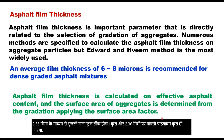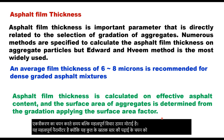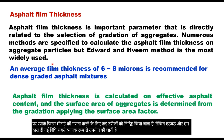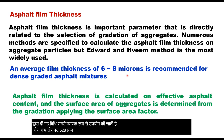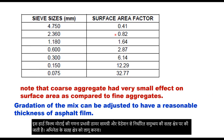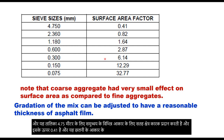Another important consideration in selecting aggregate gradation is asphalt film thickness. It is an important parameter as it controls the selection of gradation of aggregate. Numerous methods are specified to calculate the asphalt film thickness on aggregate particles, but the method given by Edwards and V is the most widely used. Generally, an average film thickness of 6 to 8 microns is recommended for dense-grade asphalt mixtures for good field performance. The asphalt film thickness is calculated based on effective asphalt content, and the surface area of aggregate is determined from the gradation applying the surface area factor. The surface area factor for 4.75 mm and above is 0.41, and it increases as the sieve size reduces. Coarse aggregate has very small effect on surface area compared to fine aggregates.